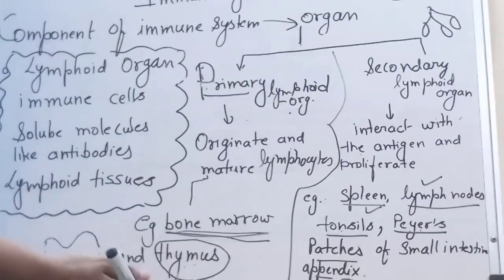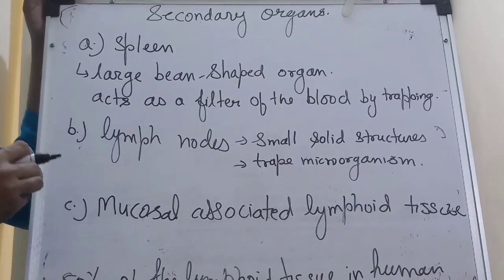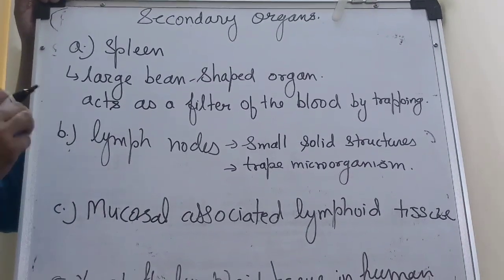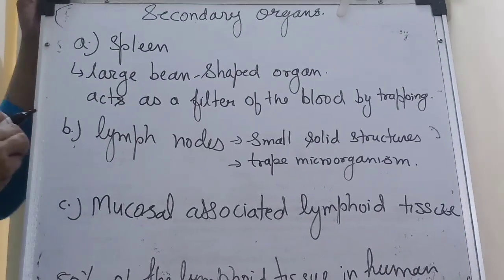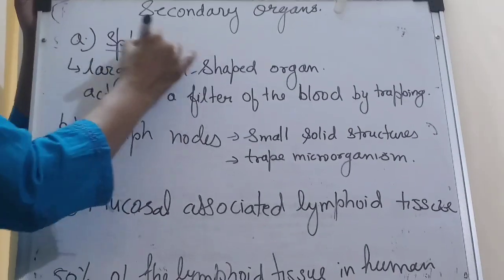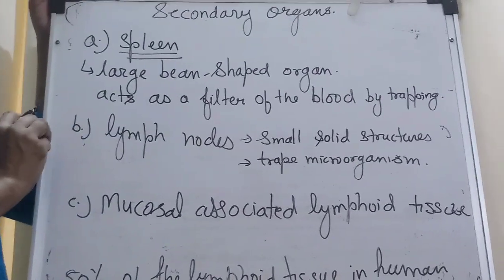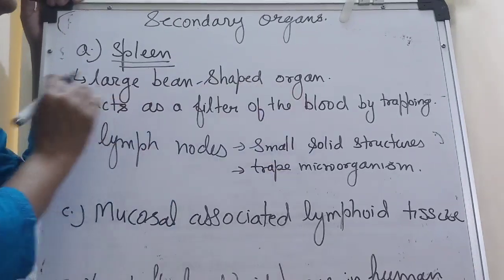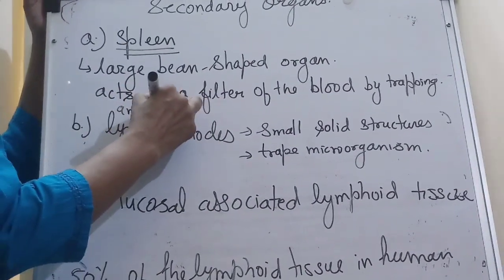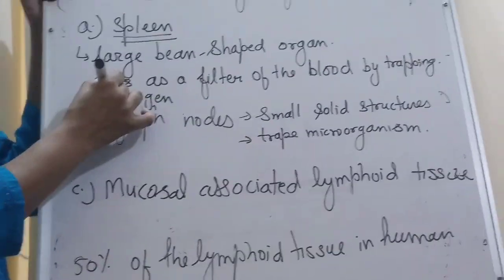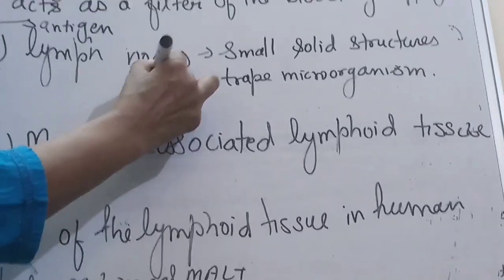This secondary lymphoid organ is where interaction with antigen and proliferation occurs. Let's see more detail — because it is a 3-month exam question. Go through your NCERT textbook also for a line or two of explanation. The spleen is a large bean-shaped structure found near the digestive tract. It acts as a filter of blood by trapping antigens, protecting our body against pathogens. Lymph nodes are small solid structures.